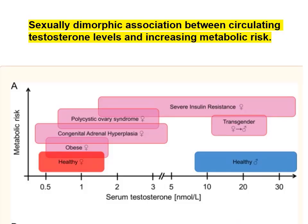The complex association between steroid levels and metabolic disorders is well illustrated by looking at serum testosterone levels in women. Healthy women have low levels of testosterone while healthy male levels are higher. Obese women, adrenal hyperplasia, and polycystic ovarian syndrome can all raise testosterone levels, and raised testosterone levels are seen in severe insulin resistance in women.